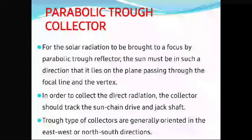In order to collect the solar radiation, the collector should track the sun using a chain drive and jack shaft. Trough type collectors are generally oriented in the east-west or north-south directions.